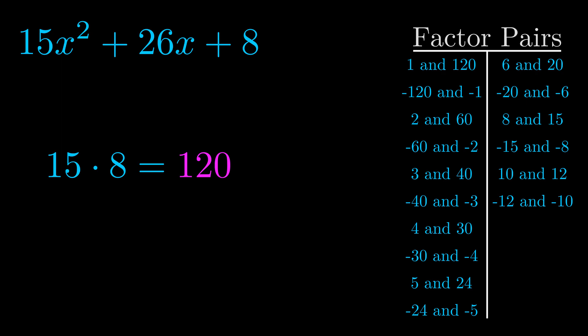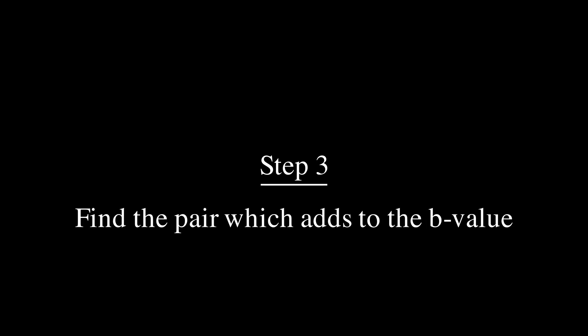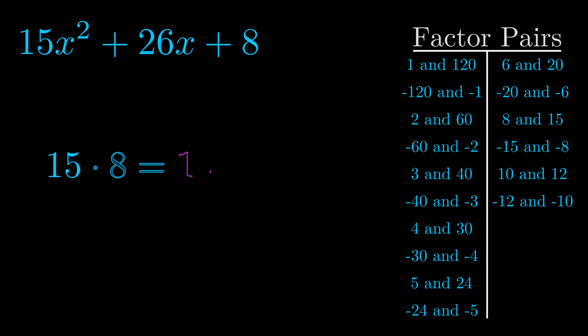Now once you have these factor pairs the goal is to find which of these pairs adds to the b value. The b value is the coefficient on the x term. That's the middle term, the one that we haven't done anything with yet. And really this is the only factor pair that we need.